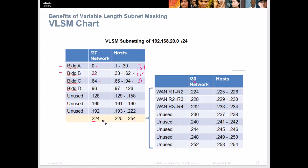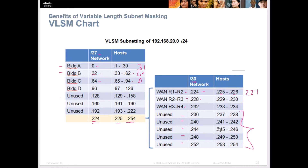This example uses the slash 30 subnets off the bottom. Traditionally I've seen VLSM used off the top, leaving the remainder at the bottom, but either way works. Here they use .224 as their network address, giving .225 and .226 as usable hosts and .227 as the broadcast. A slash 30 gives us two usable hosts per subnet range, and we need three subnets with two each. The unused subnets can be used later.